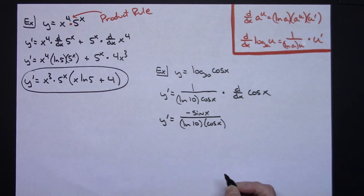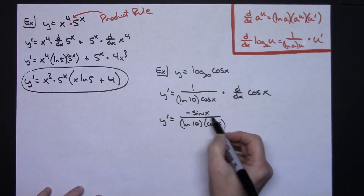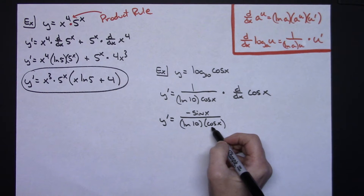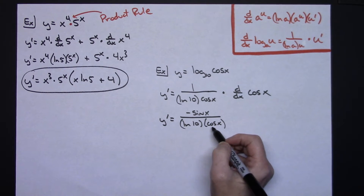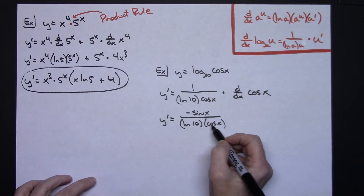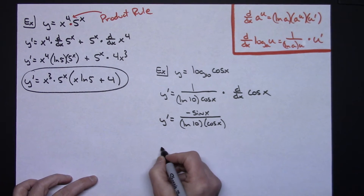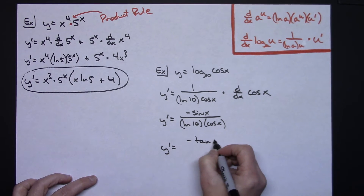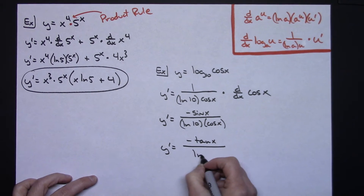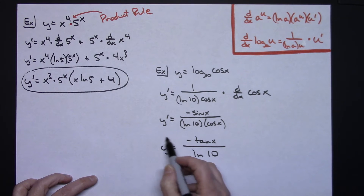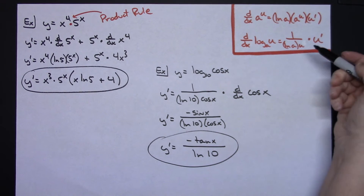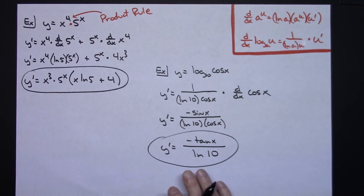The derivative of cosine x is negative sine x, so I put that on top: y prime equals negative sine x all over natural log of 10 times cosine x. Then I notice sine over cosine is tangent, so I substitute: y prime equals negative tangent x all over natural log of 10. Pretty straightforward application of just following that formula.